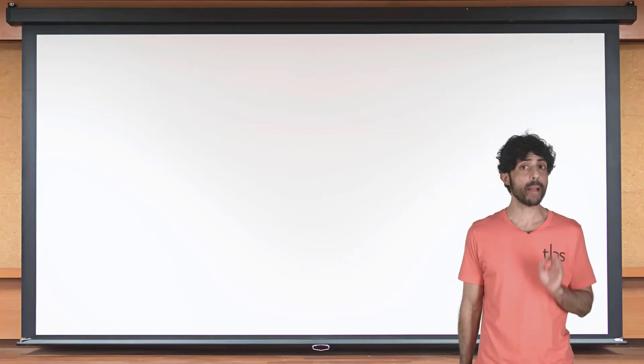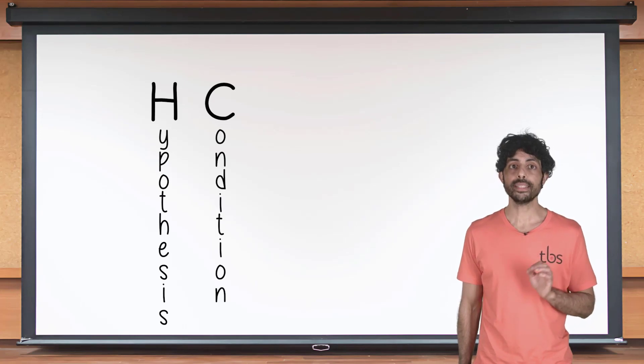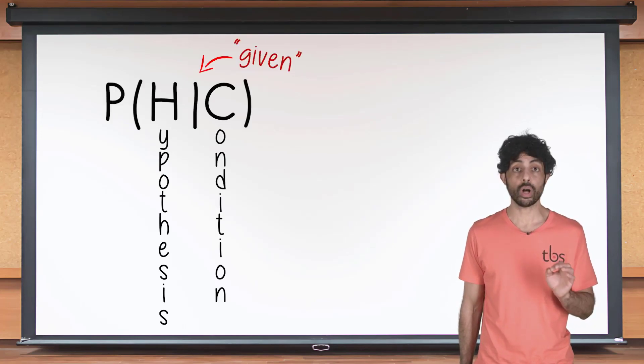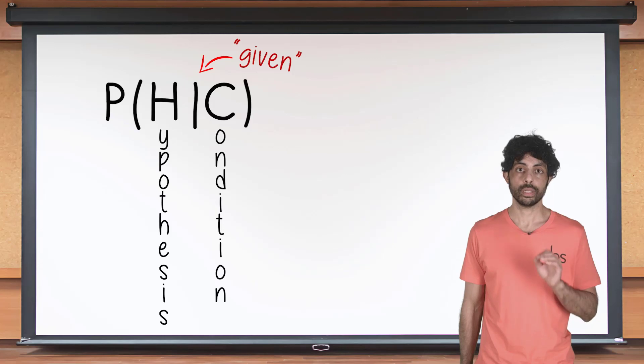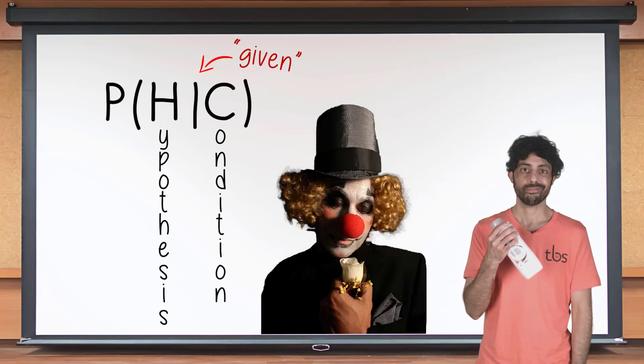Please stop. Bayes rule tells you the probability that some hypothesis H is correct given some condition C. We write this as P of H given C and we call it conditional probability. Not conditioner probability, which for most clowns is zero. They're frizzy.